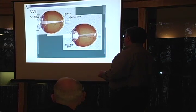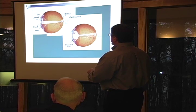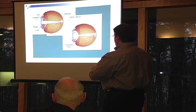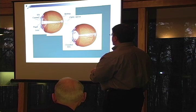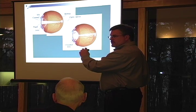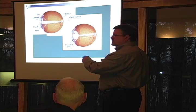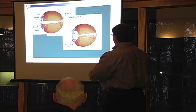Why do cataracts cause blurry vision? Here is a diagram. This is a clear lens — it's perfectly clear, you can't even see it. But if you get cloudiness in the lens of the eye, what happens to light as it comes in? Through a clear lens, you get a nice focused point. Through a cloudy lens, light cannot be focused — it's diffracted. And so that is why you have blurry vision.